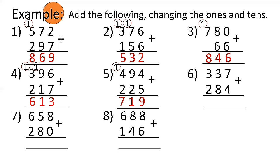Number 6: 337 plus 284 — 7 plus 4 is 11, bring down 1, carry 1 to tens. 3 plus 8 is 11, plus 1 is 12, bring down 2, carry 1 to hundreds. 3 plus 2 plus 1 is 6. Answer is 621. Number 7: 658 plus 280 — 8 plus 0 is 8. 5 plus 8 is 13, bring down 3, carry 1 to hundreds. 6 plus 2 is 8 plus 1 is 9. Answer is 938.